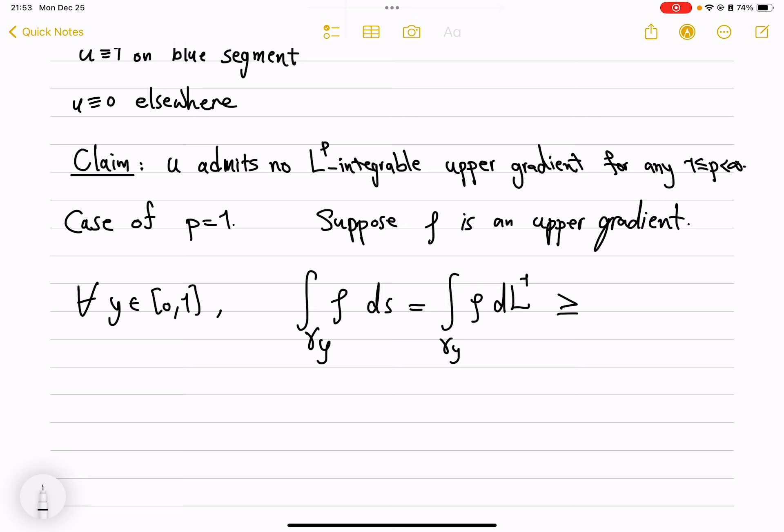Remember, one end u is 1, and the other end is 0, so this is equal to just 1. So we see that integrating rho along this path gives 1.